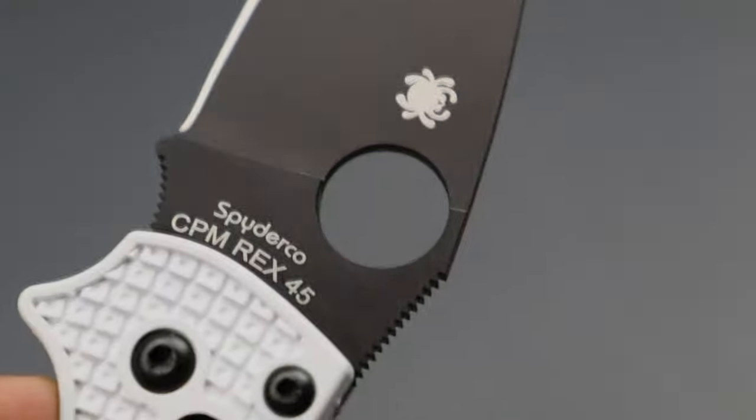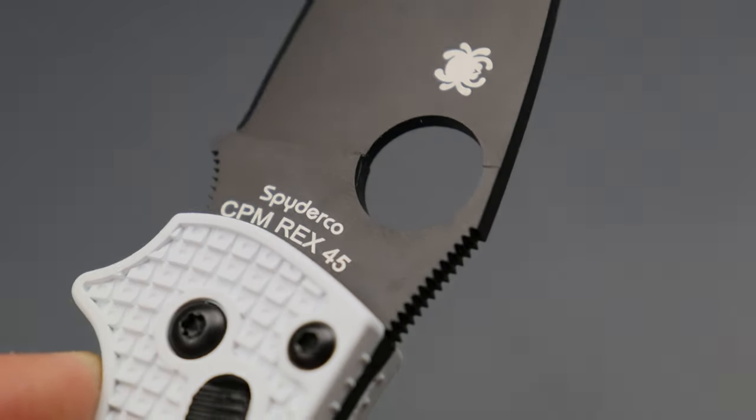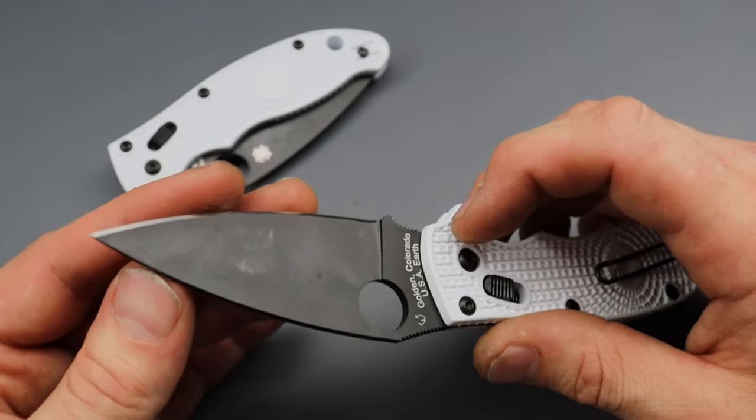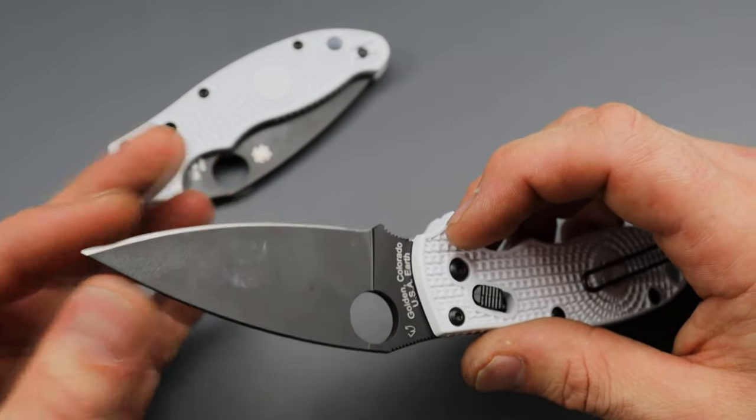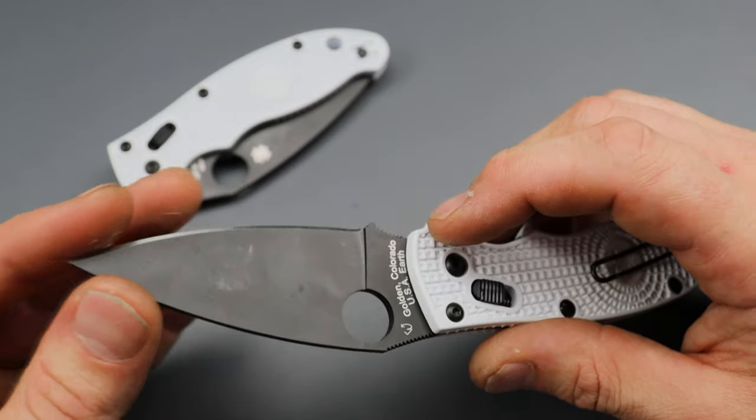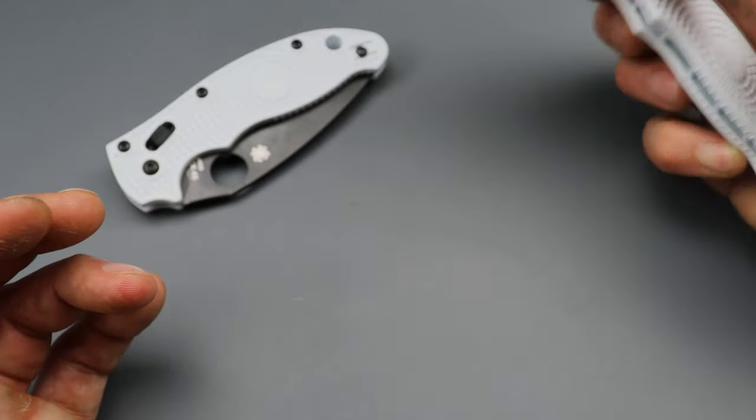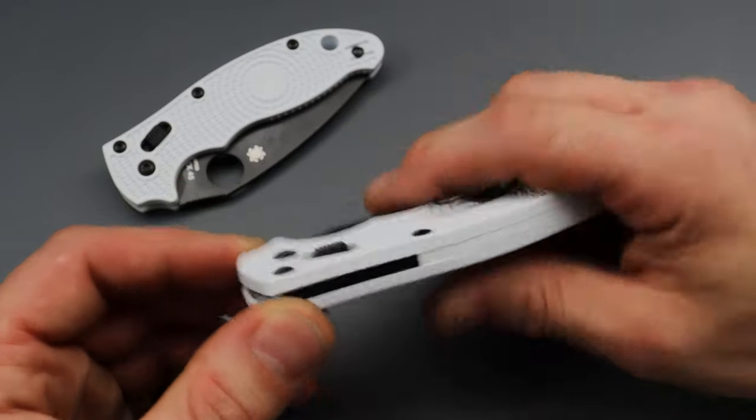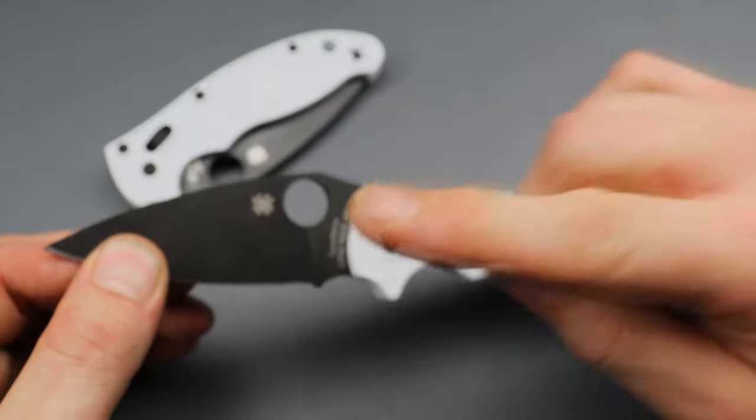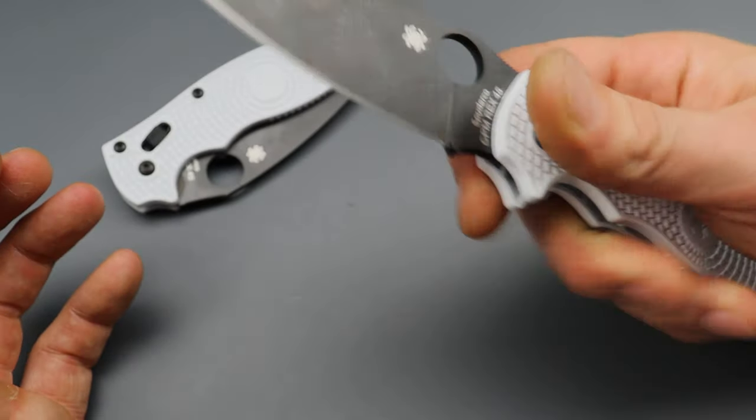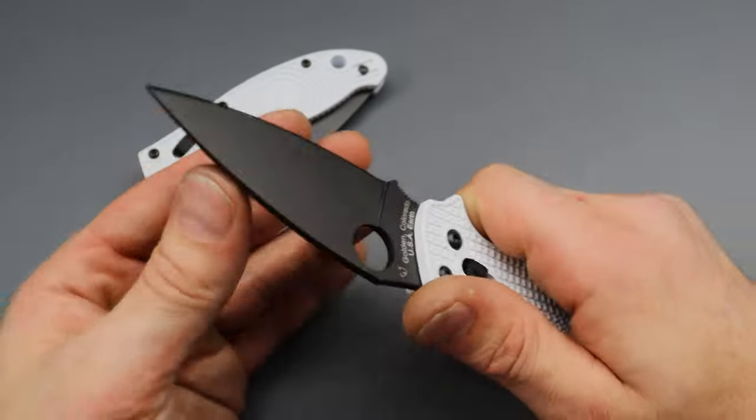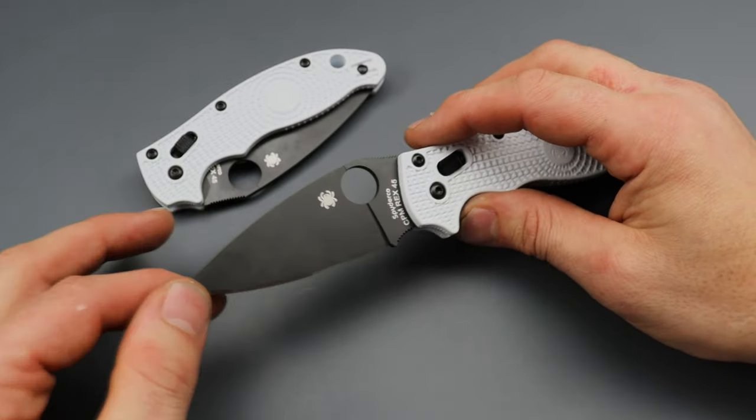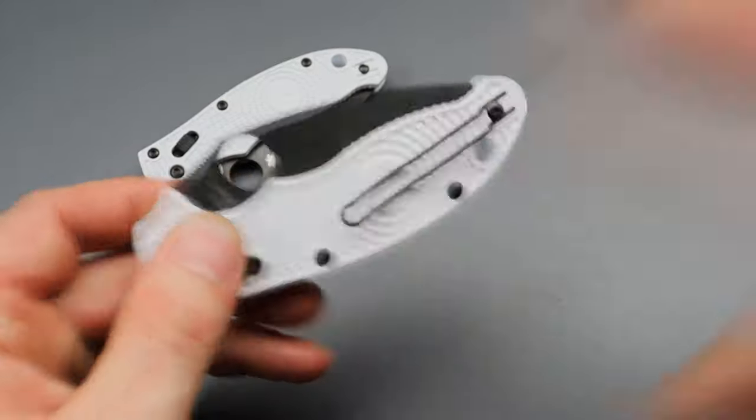And now with Rex 45 steel, that's awesome. Rex 45 is a super high wear resistant steel. It takes an incredibly sharp edge. Now I'm going to test it because I haven't tested it enough to know if it takes a mirror edge better than a toothy edge. Awesome knife. It'll be linked down in the description.